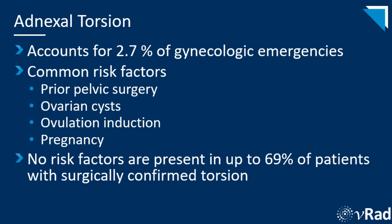The prevalence of adnexal torsion in females who present with acute pelvic pain is approximately 2 to 3 percent. The common risk factors are prior pelvic surgery, ovarian cysts, ovulation induction, and pregnancy. No risk factors are present in many patients with surgically confirmed torsion, and risk factors are hardly reported even if they are present.